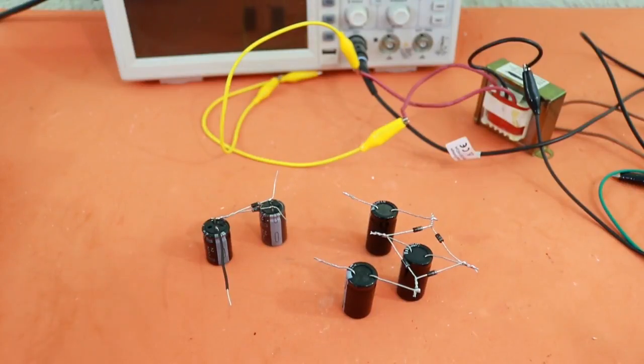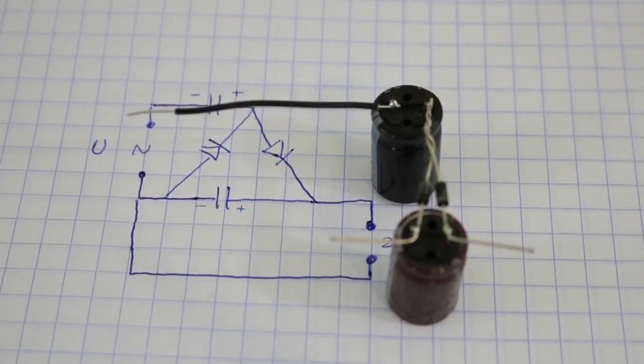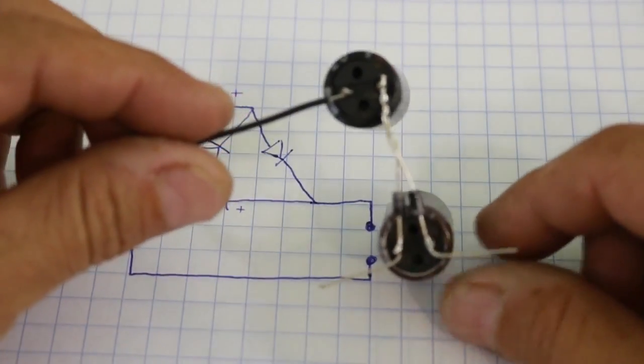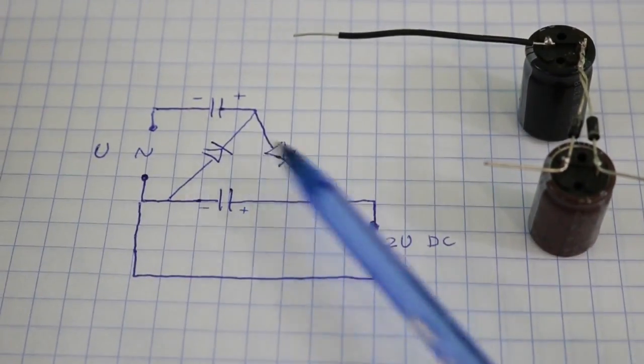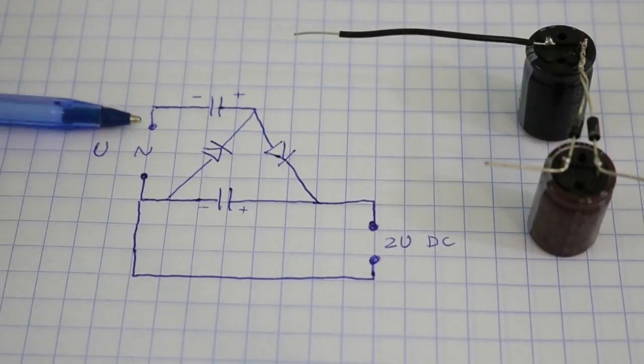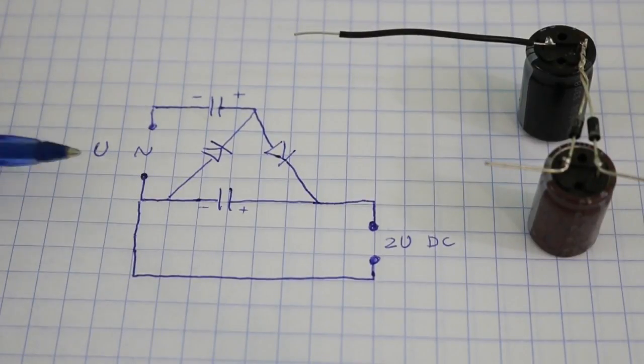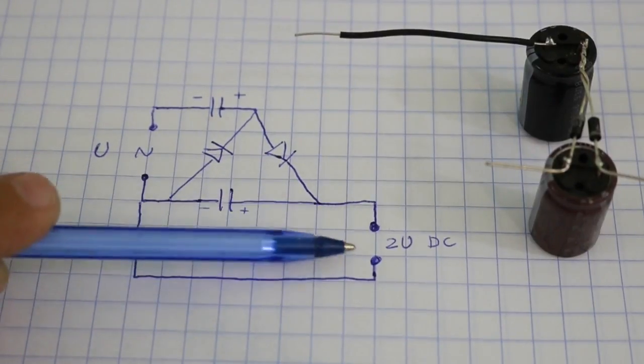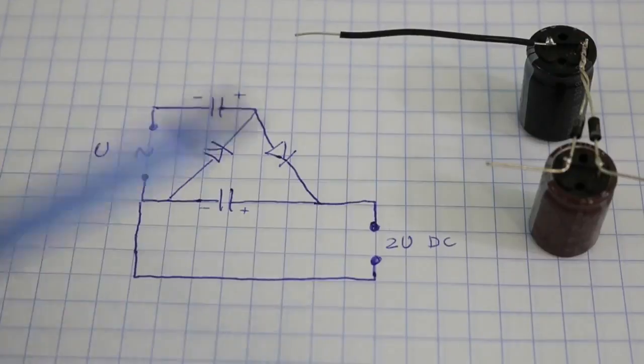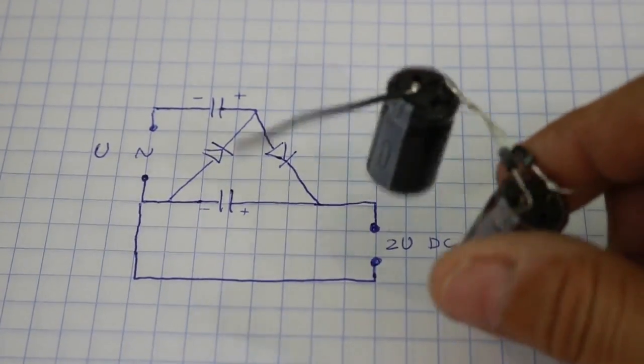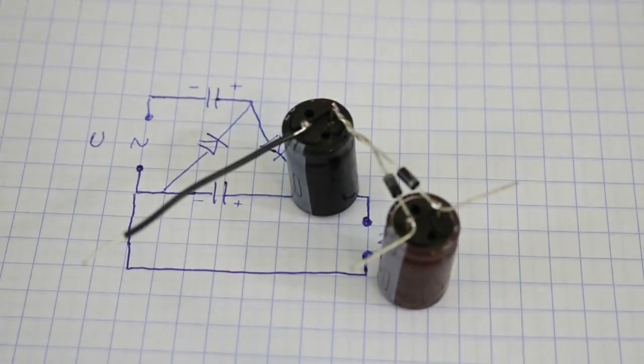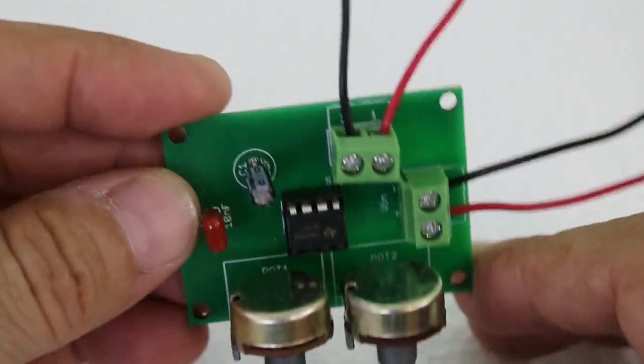The simplest voltage doubler that you can build has only two diodes and two capacitors connected as in the diagram, very easy to make. At this point you apply an alternating current voltage, and at this point you get double that voltage, but it is DC. Let's now see how it works.